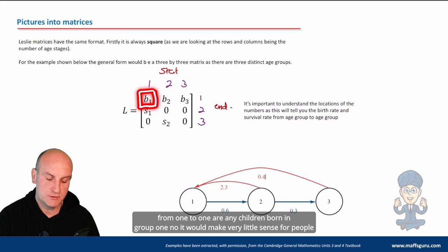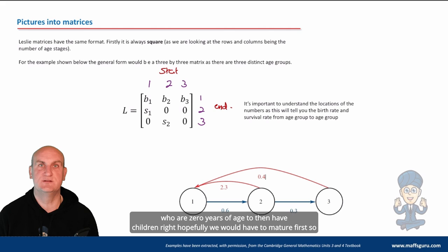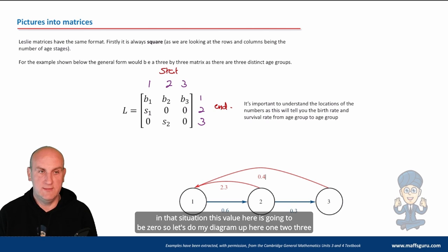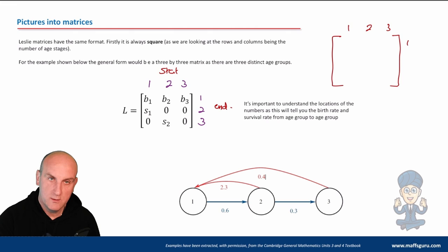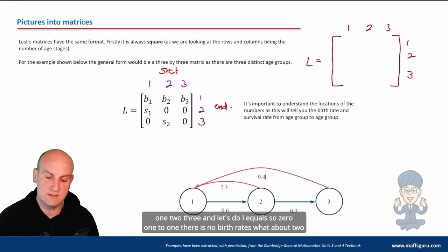From one to one. Are any children born in group one? No. It would make very little sense for people who are zero years of age to then have children. Hopefully we would have to mature first. So in that situation, this value here is going to be zero. So let's do my diagram up here. One, two, three. One, two, three. And let's do L equals. So one to one, there is no birth rates.